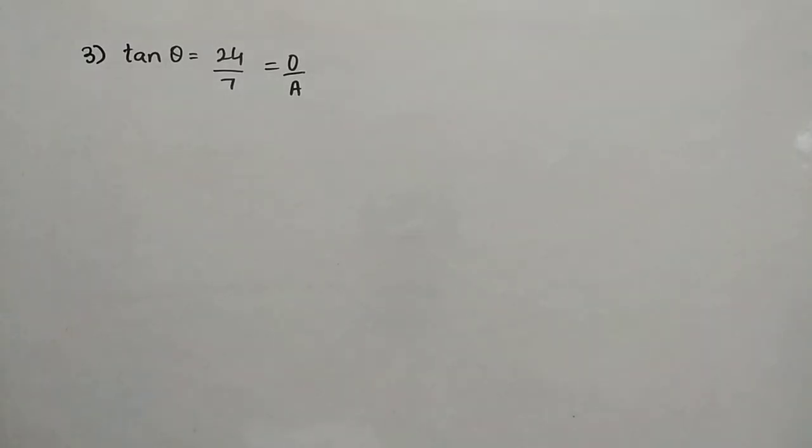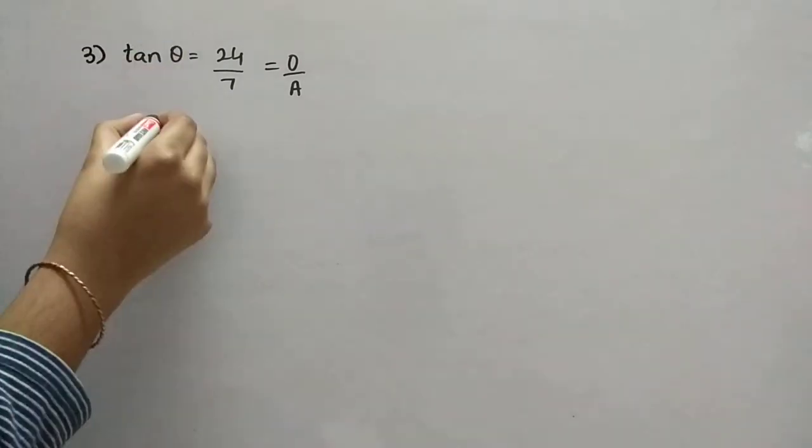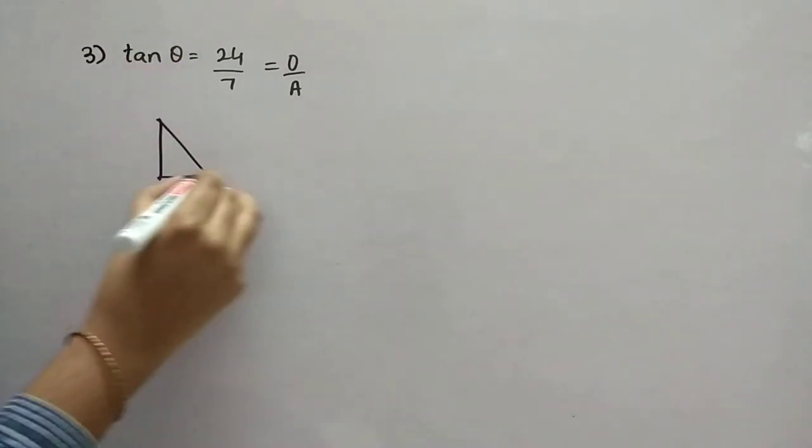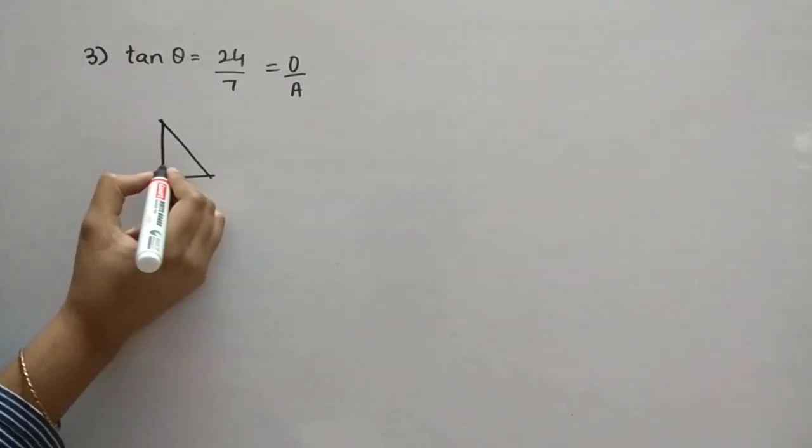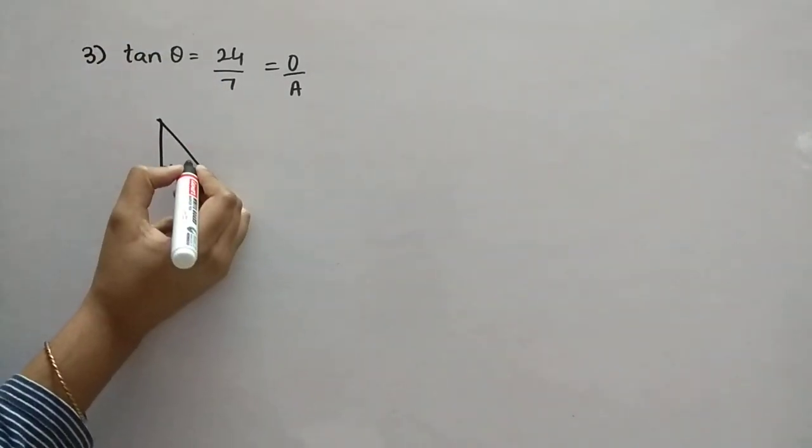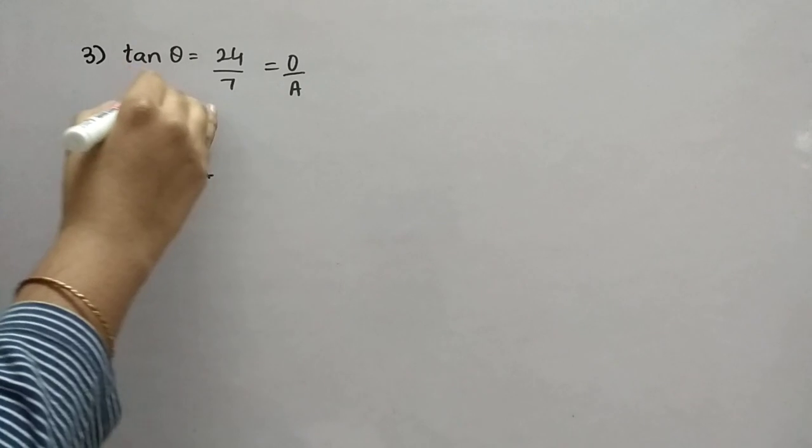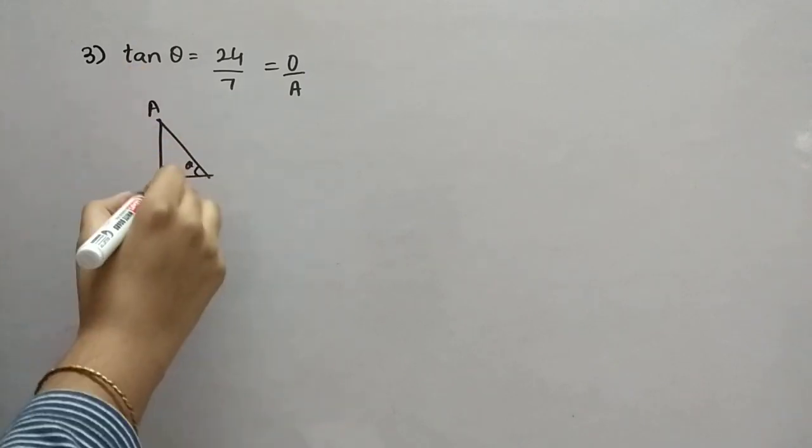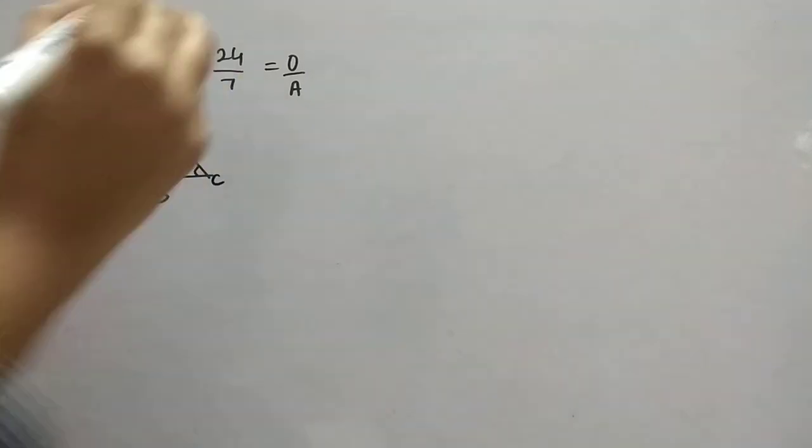Now we will see the next challenger. Third question is tan theta is equal to 24 by 7, such as O by A. What we have to find, secant square, secant theta plus cosecant theta. That's it. So first, we will draw one right angle triangle and we will consider right angle, this will be theta, right? So, A, B, C something we will name it.